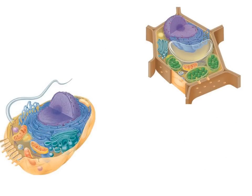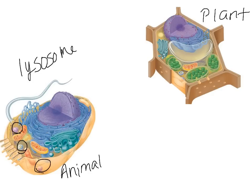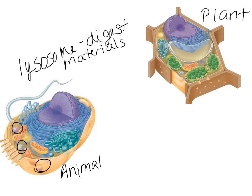These next structures are more plant and animal cell specific — ways to determine whether a eukaryotic cell is a plant or an animal cell. Animal cells have what are called lysosomes, which look similar to vesicles and vacuoles and are not very visually distinguishing. A lysosome's job is to digest materials — things that have come into the cell that need to be broken down.